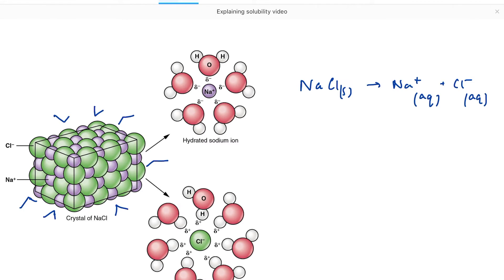We would see here that the oxygen end, the electronegative oxygen end of our water molecules, is going to be attracted to the sodium ion. Opposites attract. And the electropositive hydrogen parts of the water molecules are going to be attracted to our chloride ions.